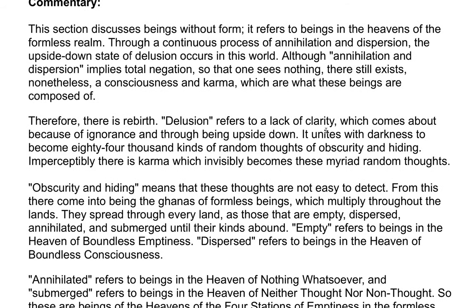Commentary: This section discusses beings without form — beings in the heavens of the formless realm. Through a continuous process of annihilation and dispersion, the upside down state of delusion occurs in this world. Although annihilation and dispersion implies total negation so that one sees nothing, there still exists nonetheless a consciousness and karma which are what these beings are composed of. Therefore there is rebirth. Delusion refers to a lack of clarity which comes about because of ignorance and through being upside down. It unites with darkness to become 84,000 kinds of random thoughts of obscurity and hiding; imperceptibly there is karma which invisibly becomes this myriad of random thoughts. Obscurity and hiding means that these thoughts are not easy to detect.